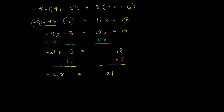So now we have negative 21x is equal to 21, and we want to solve for x. If you have something times x and you just want x, let's divide by that something — in this case, negative 21. So we divide both sides by negative 21. Negative 21 divided by negative 21 leaves just x. And x is equal to 21 divided by negative 21, which is just negative 1.